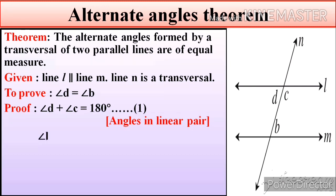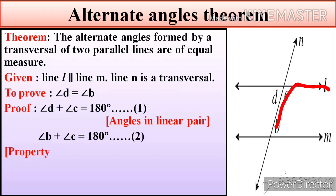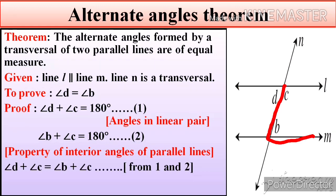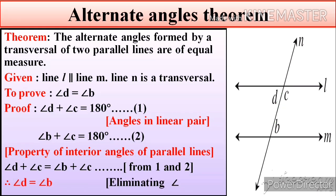Proof: Angle D plus angle C equals 180 degrees — equation number two — by the property of interior angles of parallel lines.